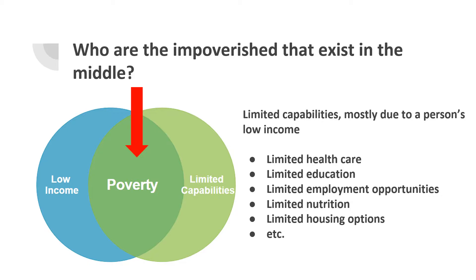According to our definition, an impoverished person is someone who has limited capabilities due to low income. This may manifest in things such as limited healthcare, limited education, limited employment opportunities, limited nutrition, limited housing options, and more. Overall, it's a combination of all these types of factors that limit a person's capabilities.